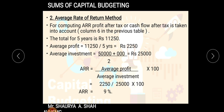Average investment is calculated as: original investment plus scrap value, divided by two. Here, original investment is fifty thousand and scrap value is not given, so we take it as zero. Fifty thousand plus zero divided by two gives average investment of twenty-five thousand. So ARR = 2,250 divided by 25,000, multiplied by 100, which gives a rate of return of nine percent.